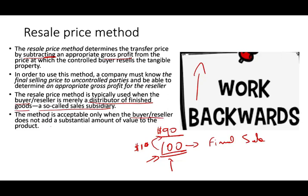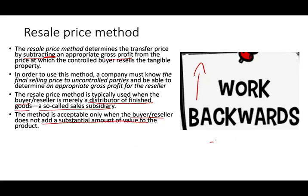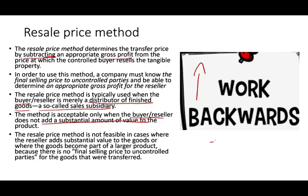The method is acceptable only when the buyer and the reseller does not add a substantial amount of value to the product — all they're doing is selling it at an additional profit. The resale price method is not feasible in cases where the reseller adds substantial value to the goods or where the goods become part of a larger product. For example, if you sold batteries and those batteries go into a car, the distributor is not selling the batteries — they're selling the car, and the battery is only part of it. There's no final selling price to the uncontrolled parties for the goods that were transferred.